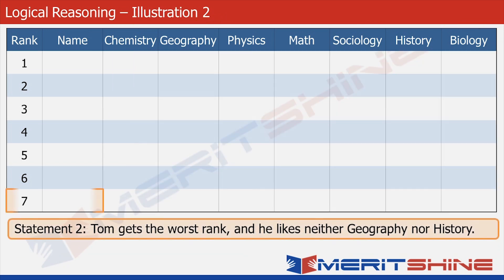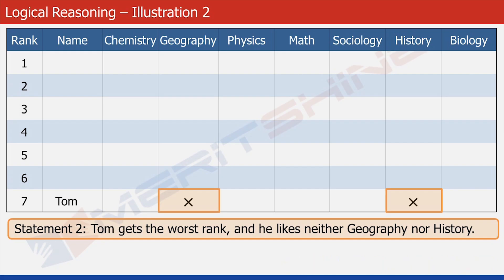We will use statement two first, which tells us that Tom gets the worst rank among the seven. So we put Tom's name against rank seven. Now look at the two highlighted cells in Tom's row — they belong to geography and history respectively. Since Tom likes neither geography nor history, we put a cross in both these cells. We leave the rest of the subject cells intact for the moment and move forward.